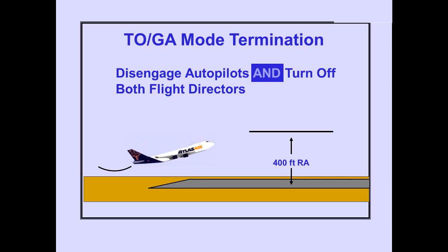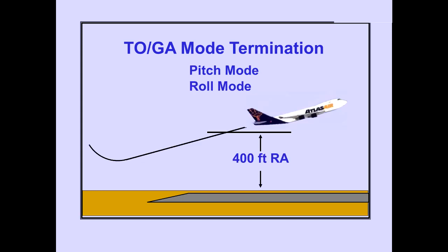Below 400 feet radio altitude, the TOGA mode can be terminated only by disengaging the autopilots and turning off both flight directors. Above 400 feet radio altitude, the TOGA mode can be terminated by selecting a different pitch mode and a different roll mode. Either one may be selected first.